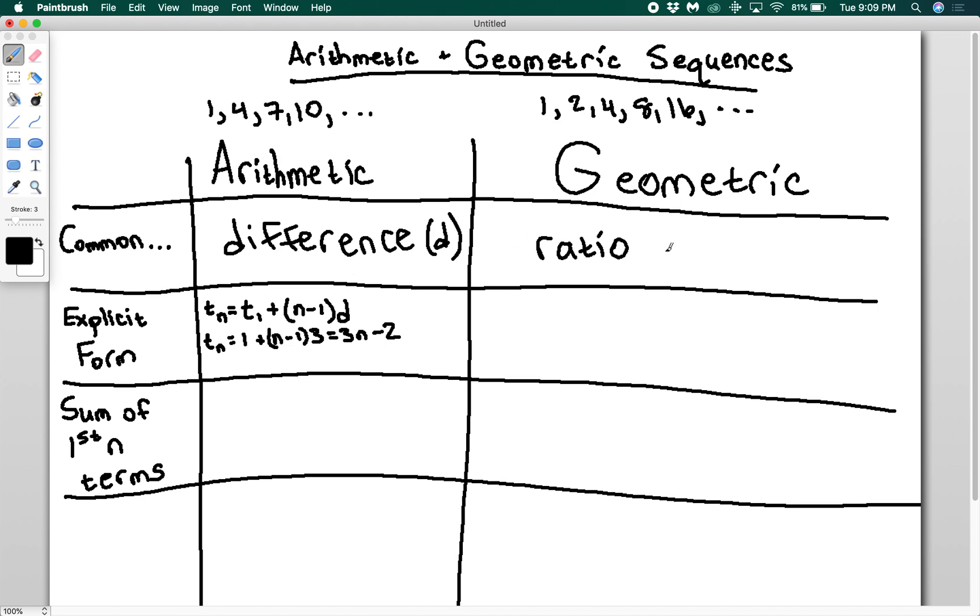For a geometric series, instead you're going to get the nth term is going to be equal to the first term times the common ratio r raised to the n minus 1 power. So for this one, the common ratio is 2 and our first term is 1. So tn equals 1 times 2 to the n minus 1.